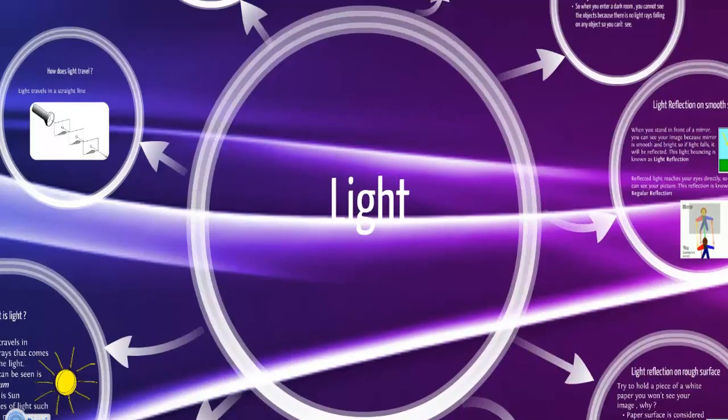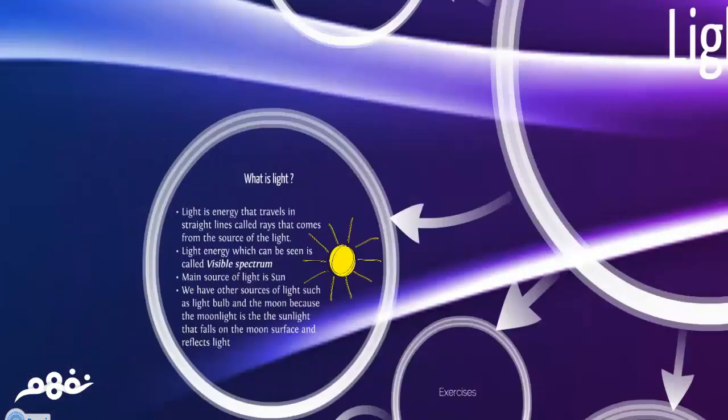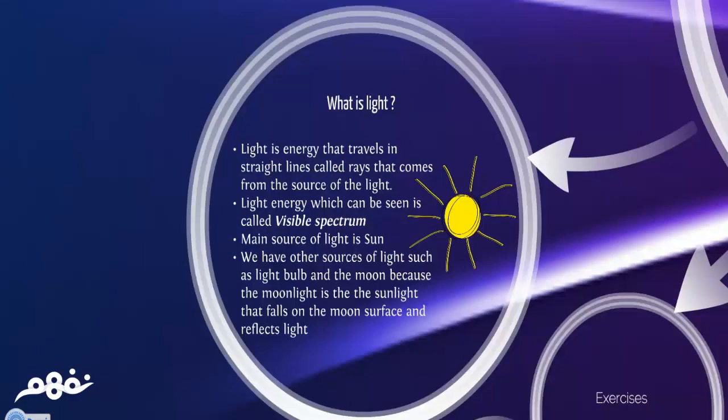So today we will talk about light. What is light? Light is energy that travels in straight lines called rays that comes from the source of the light. Light energy which can be seen is called visible spectrum. The main source of light is sun. We have other sources of light such as light bulb and the moon. The moonlight that we see is the sunlight that falls on the moon surface and reflects light.